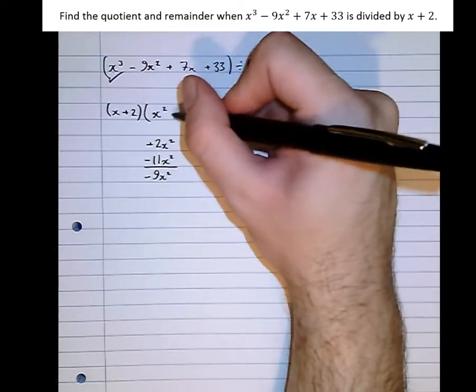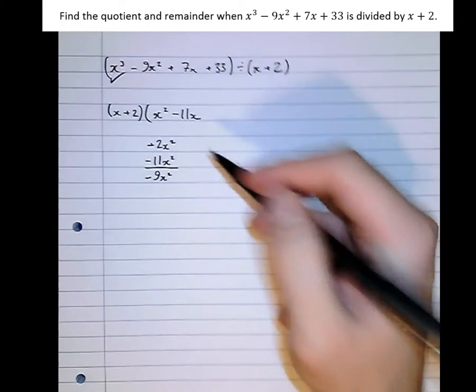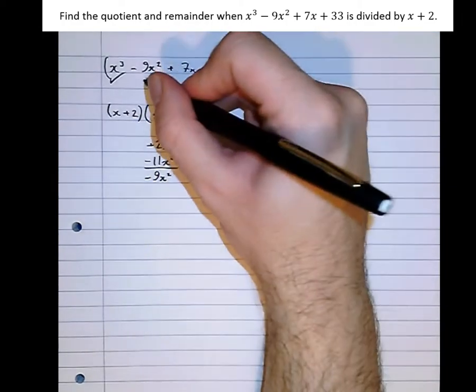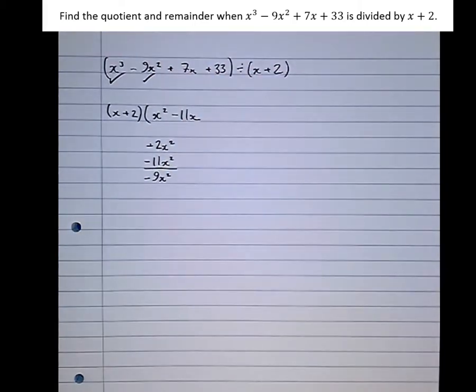So having done that, let's take 11x. That takes away the 11x squared that we need to make minus 9x squared. Brilliant. Next one.